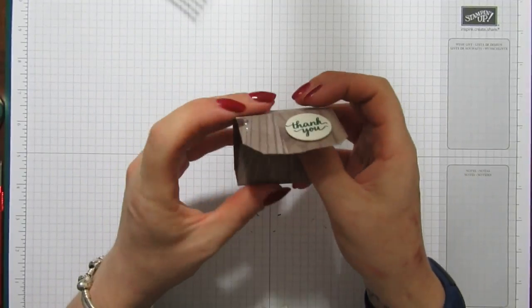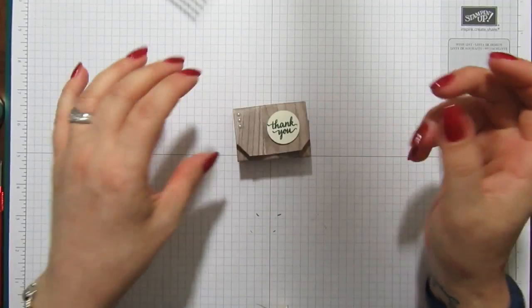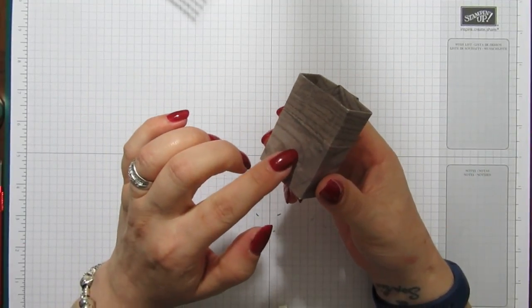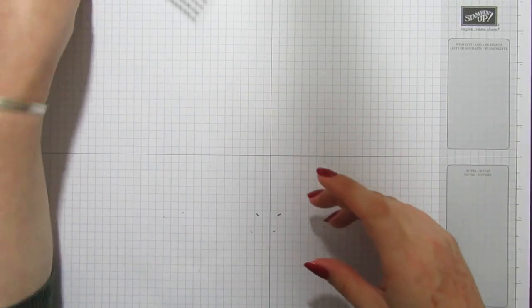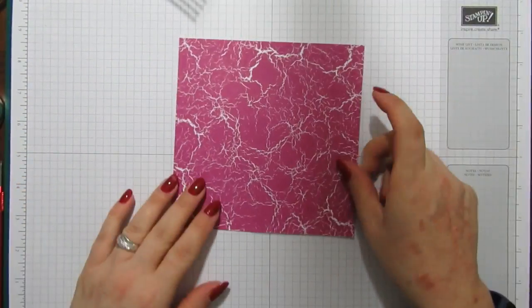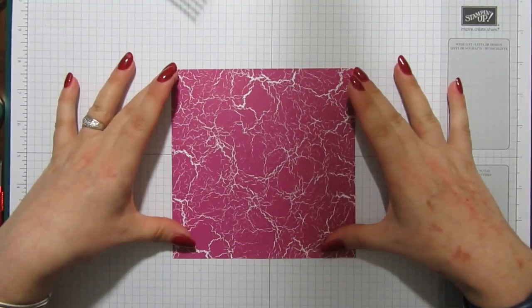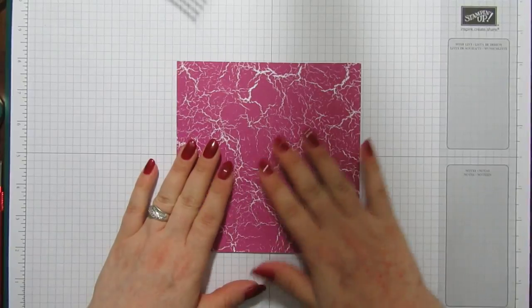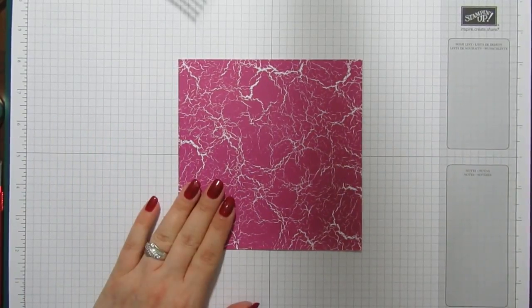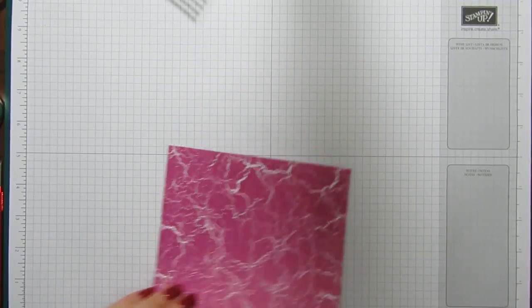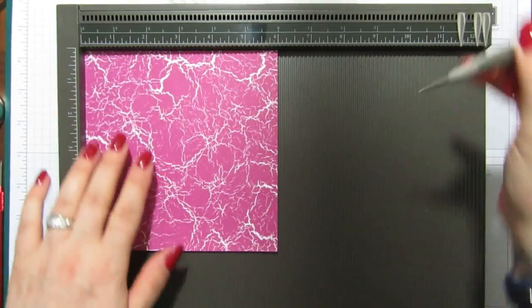You could possibly even get a couple of little chocolates in, whatever you want to put in there. So that's what I'm going to show you how to make. I think it's gorgeous. I made that with the six by six wood DSP. I'm going to make this one with the color theory and you just need one piece of six by six. You don't have to cut it or anything like that, just six by six as it is.